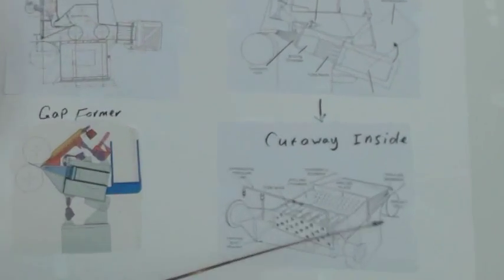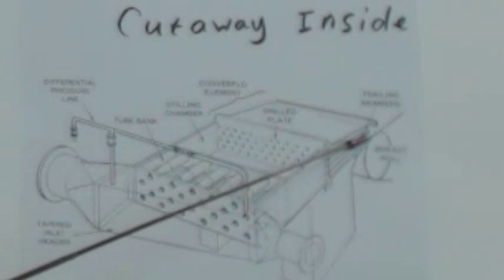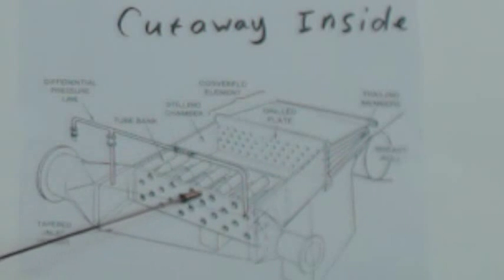And here is a cutaway diagram of that head box where you can see again manifold, tubes, stilling chamber and then the trailing sheets. When you look at it from outside, well, it's a head box but as I said, it is deceiving.